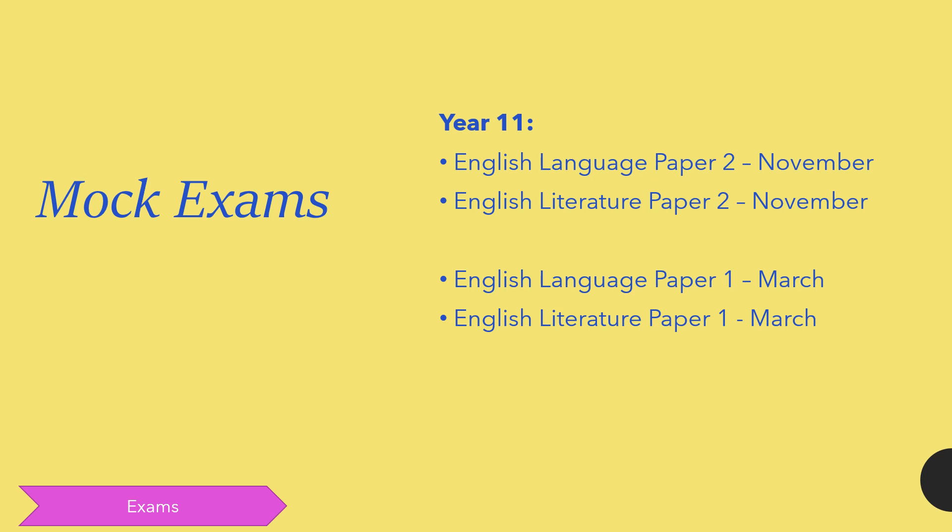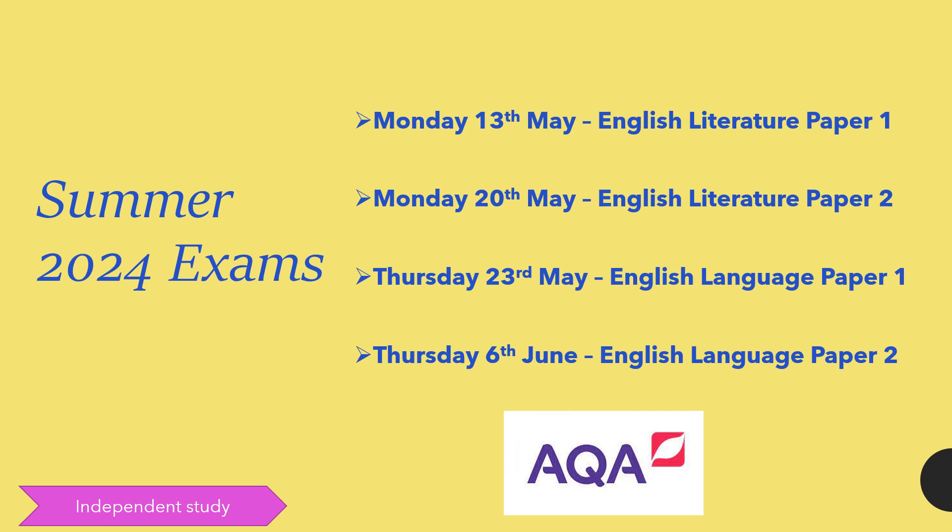For their mock exams this year, students will sit all four English mock exams. The first two are in November — both paper twos: Language Paper Two and Literature Paper Two, which is the Unseen, Inspector Calls and Poetry paper. Then in March they will sit the paper ones — the fiction paper and the Macbeth and A Christmas Carol paper. The summer 2024 exams begin on Monday the 13th of May with literature, exams are a week apart, then Language Paper One on Thursday the 23rd of May, and before Language Paper Two they have half term to rest and revise.